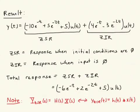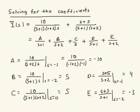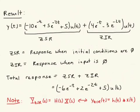If all we wanted was the total response and we didn't care about the individual ZSR and ZIR, we could have combined these expressions much earlier on — just combined the two terms first, then done the partial fraction expansion, which would have only required solving for three coefficients. But it's sometimes nice to be able to split out the ZSR and ZIR and see explicitly where they come from. That's why I've solved the equation this way.